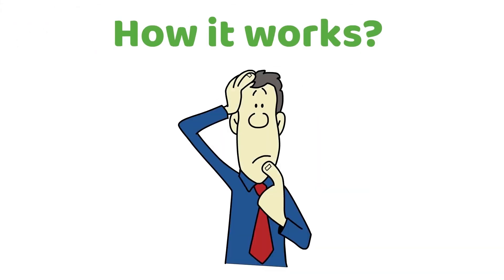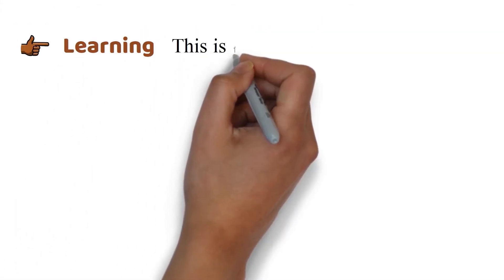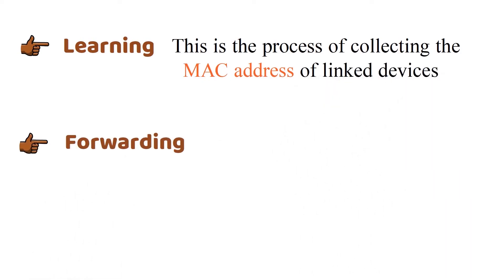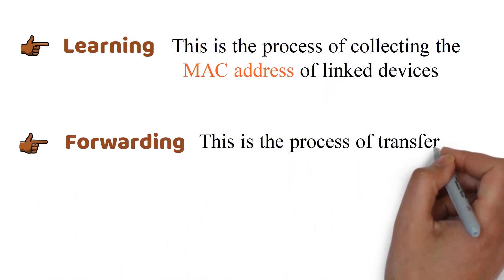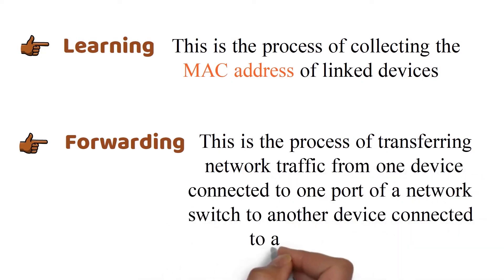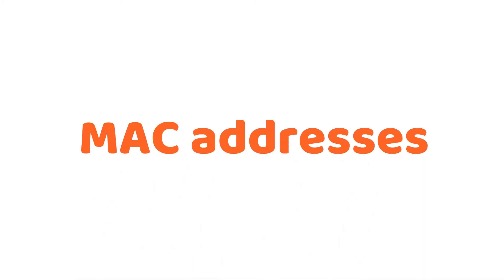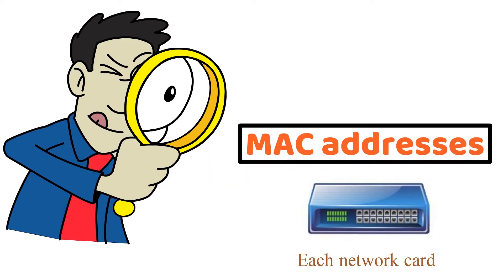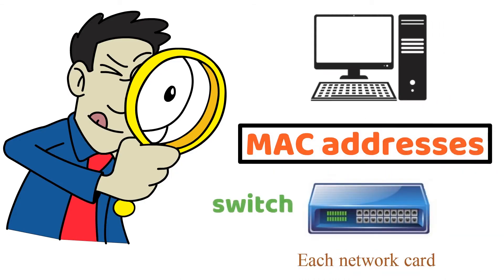How it works: Learning is the process of collecting the MAC address of linked devices. Forwarding is the process of transferring network traffic from one device connected to one port of a network switch to another device connected to another port. MAC addresses are unique addresses that each network card in a switch has and can use to identify a computer. If computer A has a MAC address, then the switch will know that the computer with that MAC address can be reached on that particular interface.